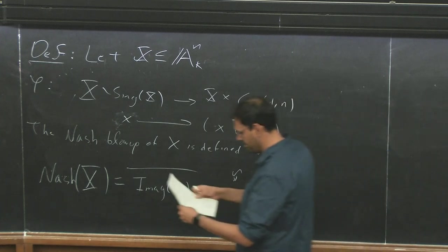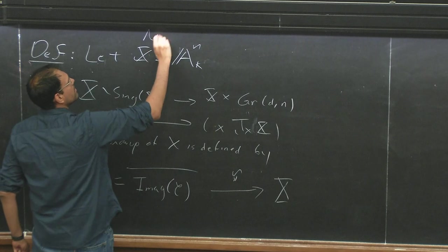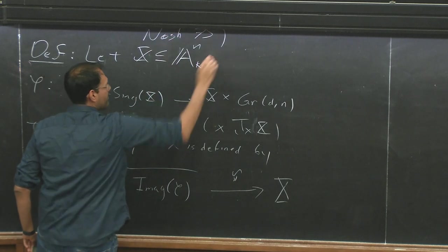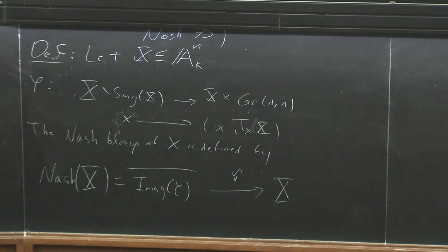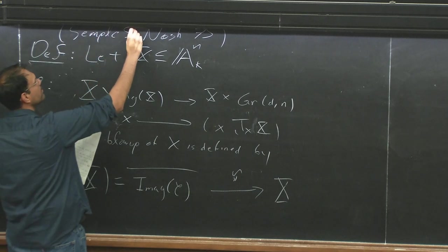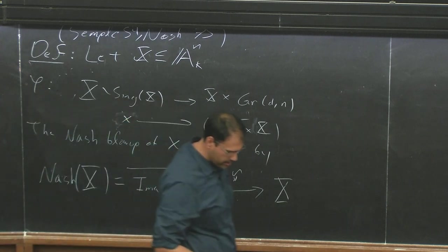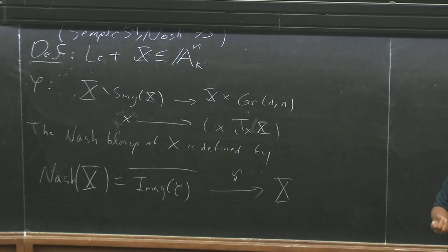This was appearing in a paper by Nobile in 75, and he credited Nash for hearing this question from him over a period of years. But if we go back a few years, there is also a paper of Semple in 54 that describes the same object. So what we're doing here is replacing the singular points by limits of tangent spaces, and we hope that that improves the variety.